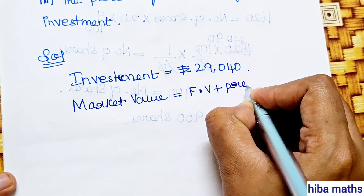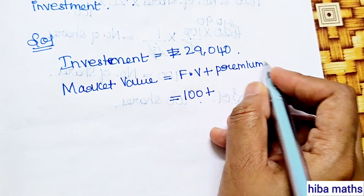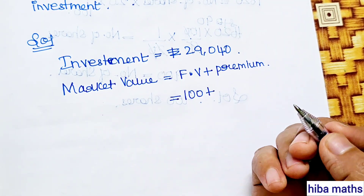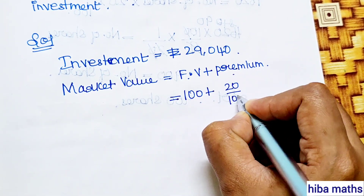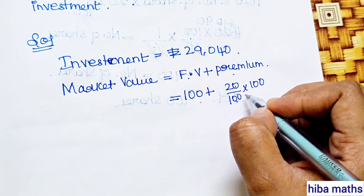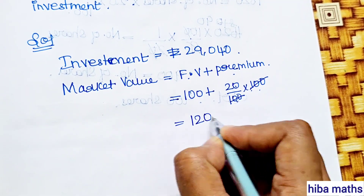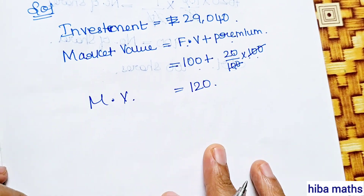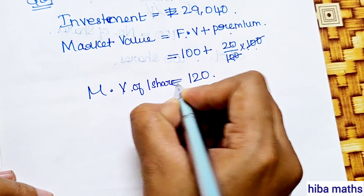Market value equals face value plus premium. Face value is rupees 100, premium is 20% of face value, so 20 by 100 into 100, which equals 20. Therefore, market value equals 100 plus 20, which is rupees 120. Market value of 1 share is rupees 120.